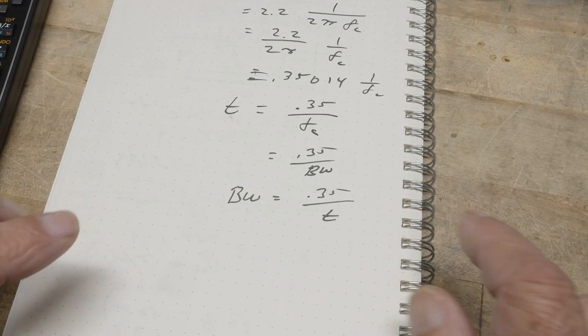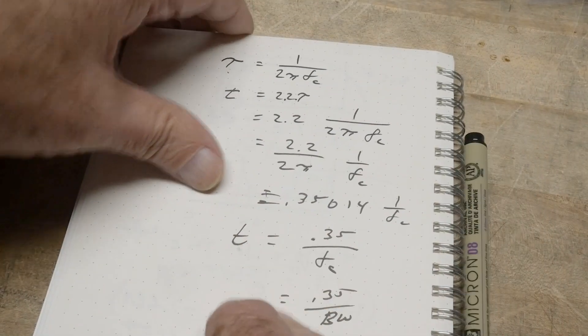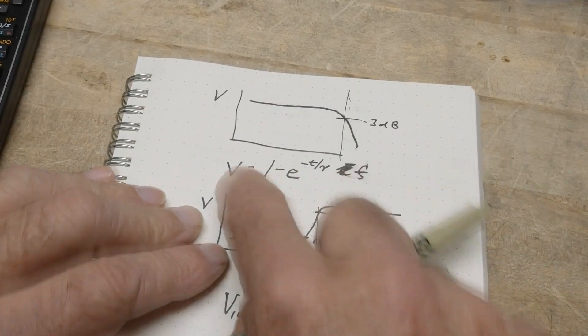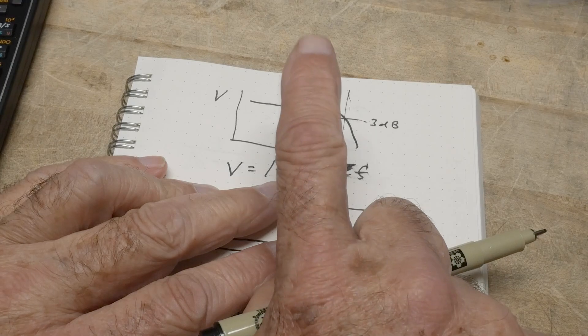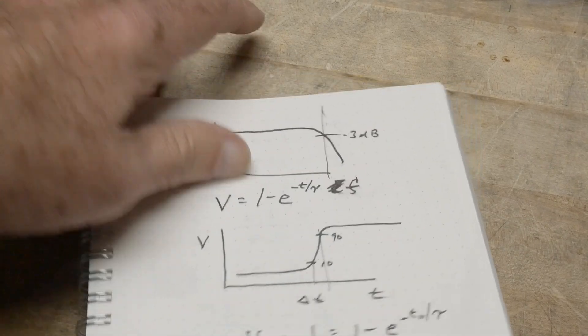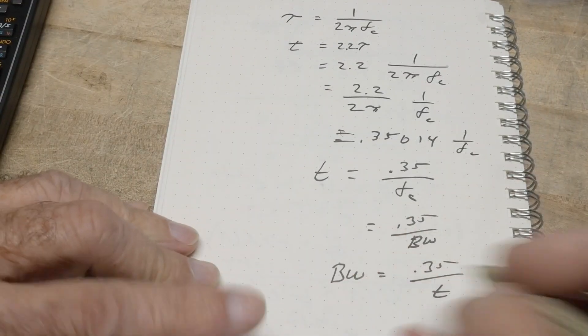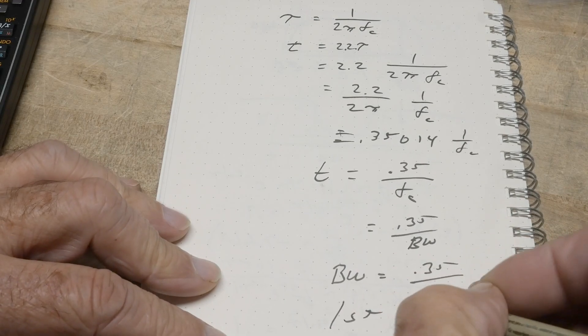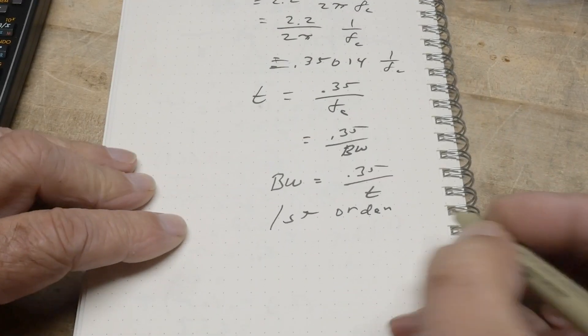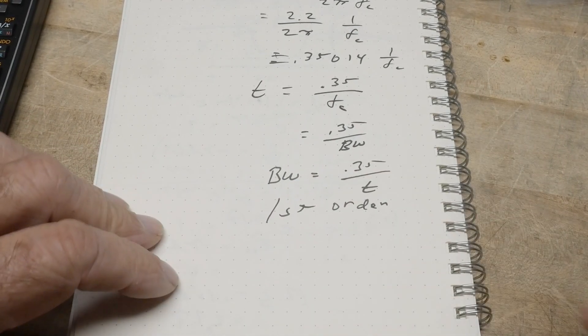Now, we did all this math and we did it for the case of this simple low-pass filter that's expressed with this equation. This is a first order equation. So the solution of 0.35 is for a first order. But that's great for analog oscilloscopes because analog oscilloscopes basically have first order filters in them. But what about digital oscilloscopes these days?